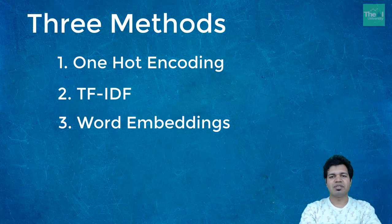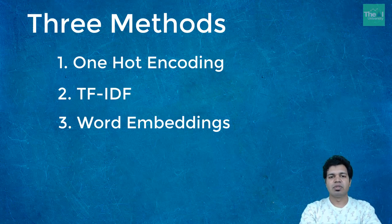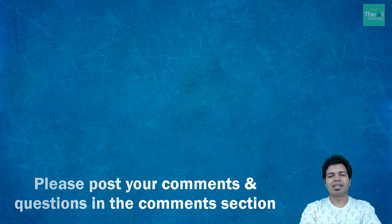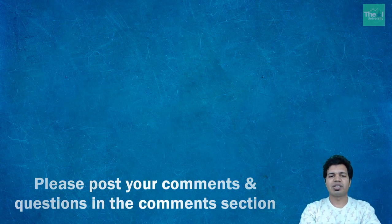To conclude: I explained how we can represent data in text form to numeric form so that deep neural networks can understand text data. A question from today's video: we know neural networks work with numbers only — how can we represent text data in numeric form? Please post your comments below so I can incorporate your feedback, and you can also ask technical questions in the comment section.